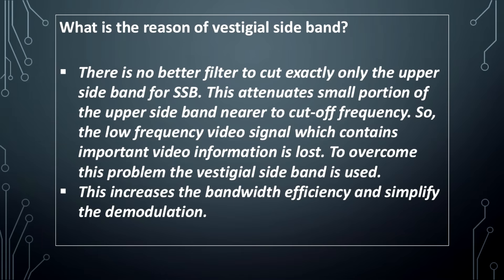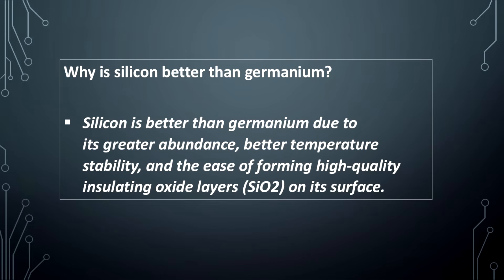What is the reason of vestigial sideband? There is no better filter to cut exactly only the upper sidebands of SSB. This attenuates a small portion of the upper sideband nearer to the cutoff frequency. So the low frequency video signal which contains important video information is lost. To overcome this problem, the vestigial sideband is used. This increases the bandwidth efficiency and simplifies the demodulation.